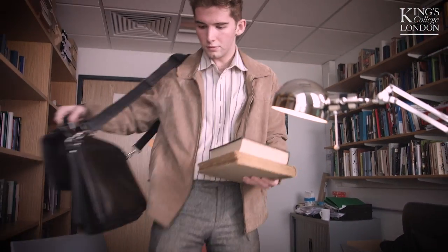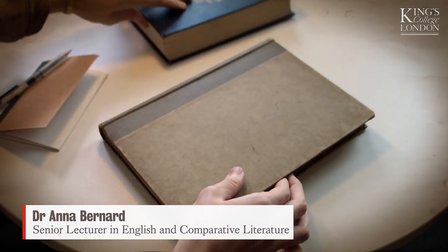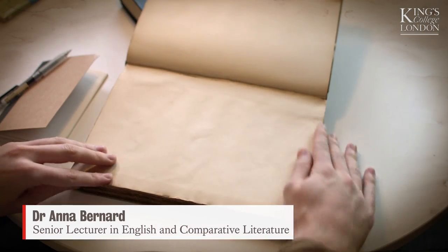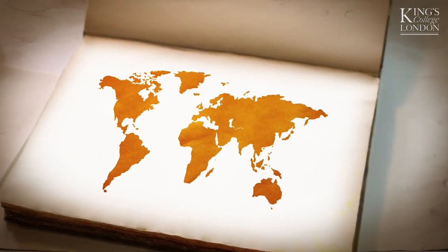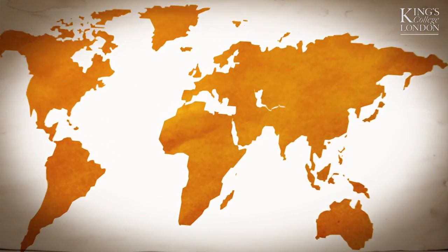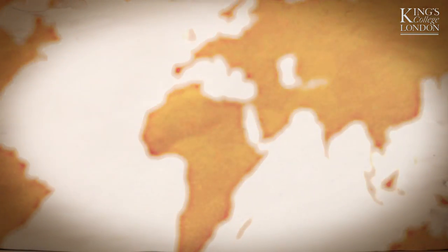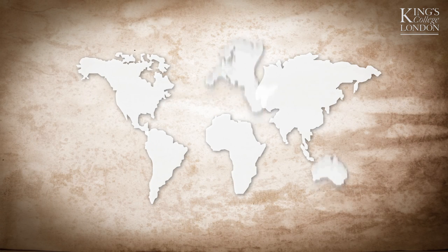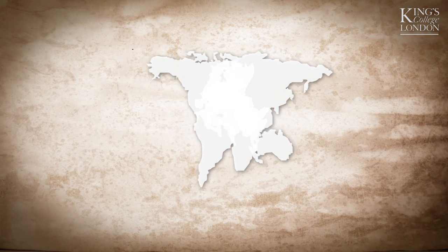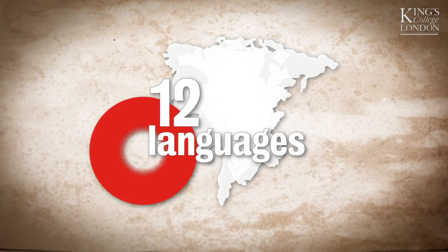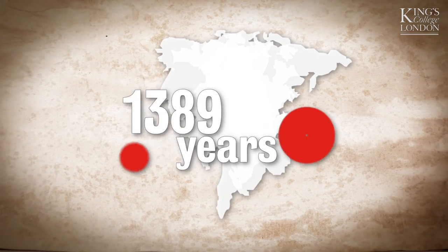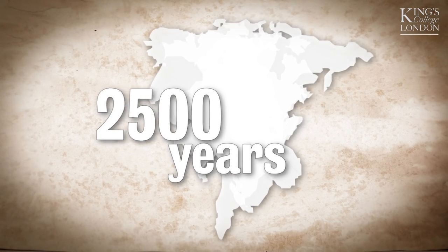What is comparative literature? How is it different from a degree in English or French? The main difference is that in comparative literature we read beyond the single language or country, in order to think about the similarities and differences between texts. We study literature from six continents, twelve languages, and over 2,500 years.